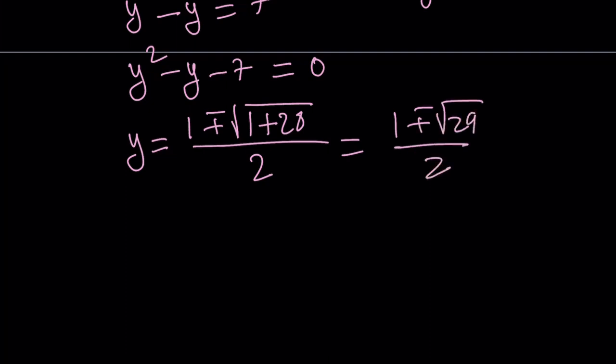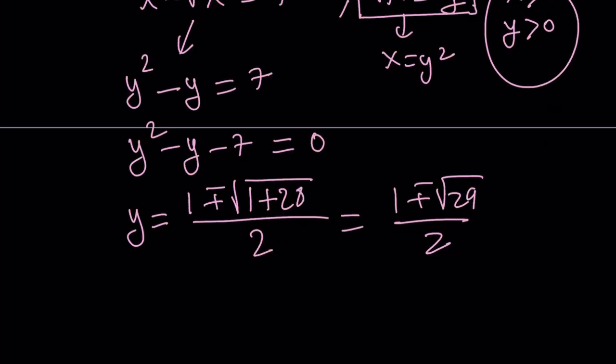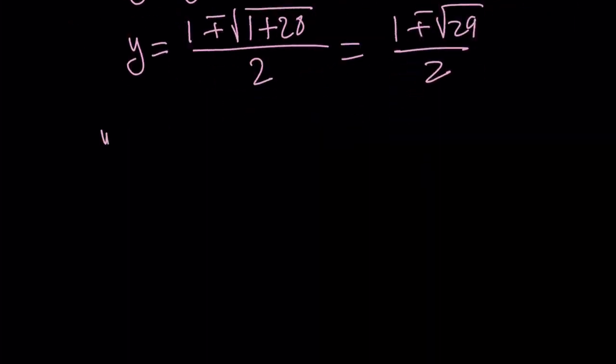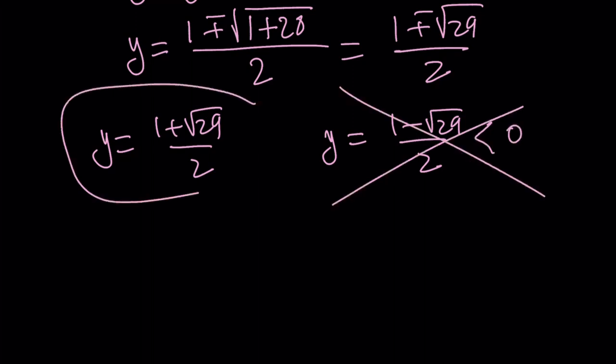Now, remember what we said about the values of y and x. We said that x and y both have to be positive. If you'll break this down, y is going to be either 1 plus root 29 over 2 or 1 minus root 29 over 2. The square root of 29 is greater than 5, therefore it's greater than 1. So this is going to be a negative quantity and we don't want that. So we're going to go ahead and throw it away and go with the first one because that is a positive value.